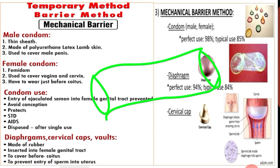The device is a polyurethane pouch with a ring at either end. The inner ring is smaller and is present at the inner closed end. The device covers the external genitalia as well as the lining of the vagina.